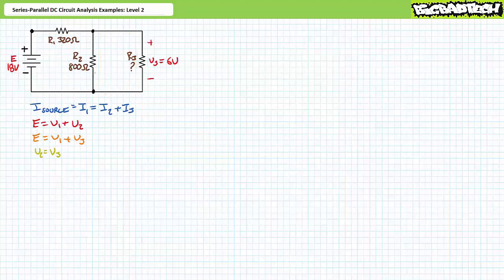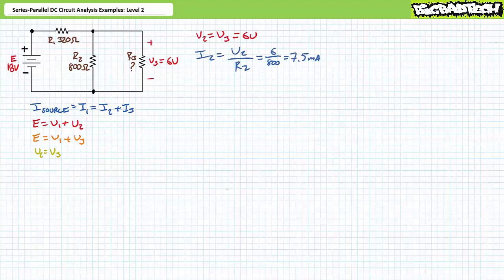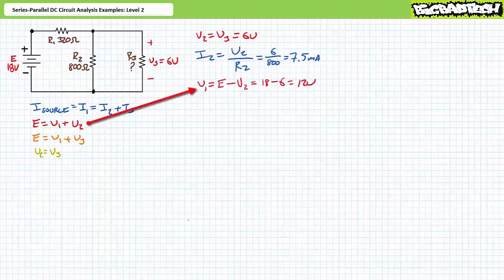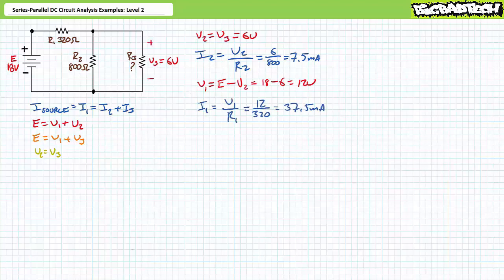These analyses imply that R2 and R3 are in parallel with one another. Voltage across elements in parallel is the same, so V2 equals V3 and they both equal 6 volts. An application of Ohm's law demonstrates that I2 is 7.5 milliamps. An algebraic rearrangement of the Kirchhoff's voltage law equation demonstrates that V1 is the remaining 12 volts. Another application of Ohm's law demonstrates that I1 is 37.5 milliamps. A Kirchhoff's current law analysis confirms that source current equals I1 and they both equal 37.5 milliamps.